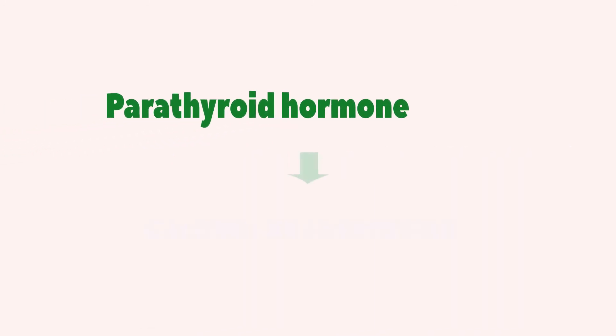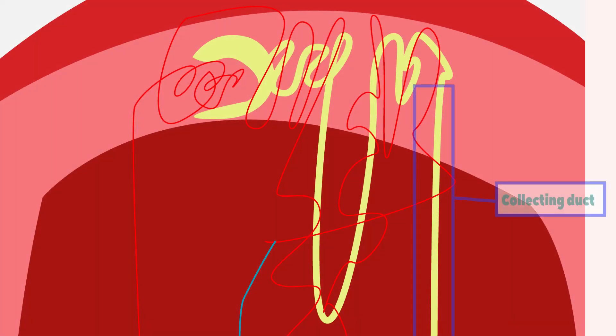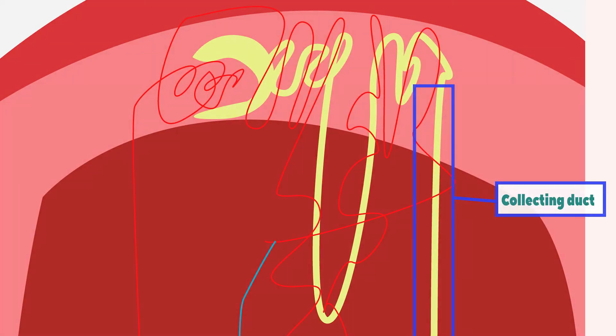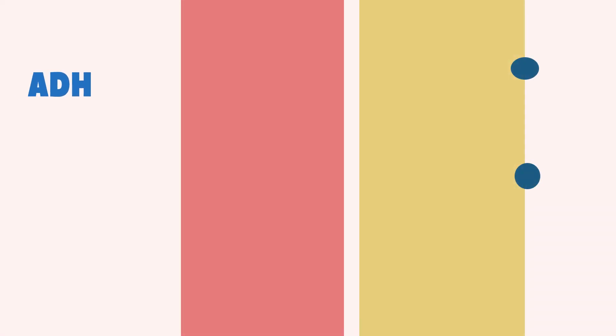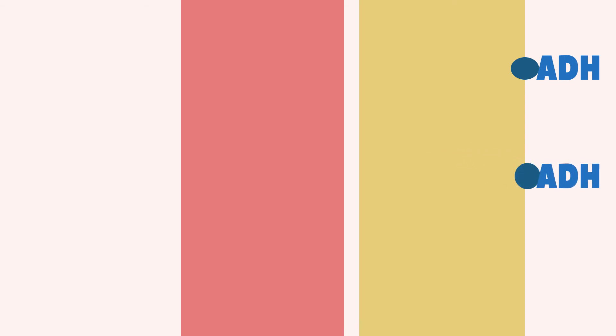Parathyroid hormone stimulates the reabsorption of calcium if blood levels are too low. If blood volume and blood pressure are too low, then more water can be reabsorbed in the collecting duct as well. The primary determinant of whether more water is reabsorbed in the collecting duct is the presence or absence of antidiuretic hormone, or ADH. If ADH is released by the pituitary gland and is present, then water channel proteins called aquaporins will be present in the collecting duct.